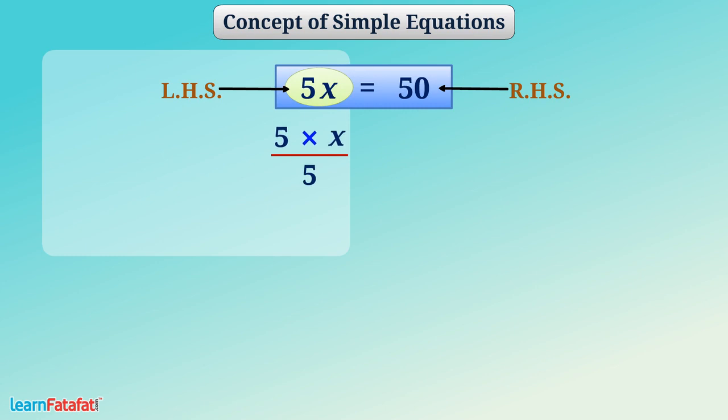Since we are dividing LHS by 5, to balance the equation, we must divide RHS by 5 as well. We can cancel 5 from numerator and denominator of LHS, so we get x in LHS. Similarly, we can divide 50 by 5 in the RHS side, so we get 10 on this side. Here, x is equal to 10.